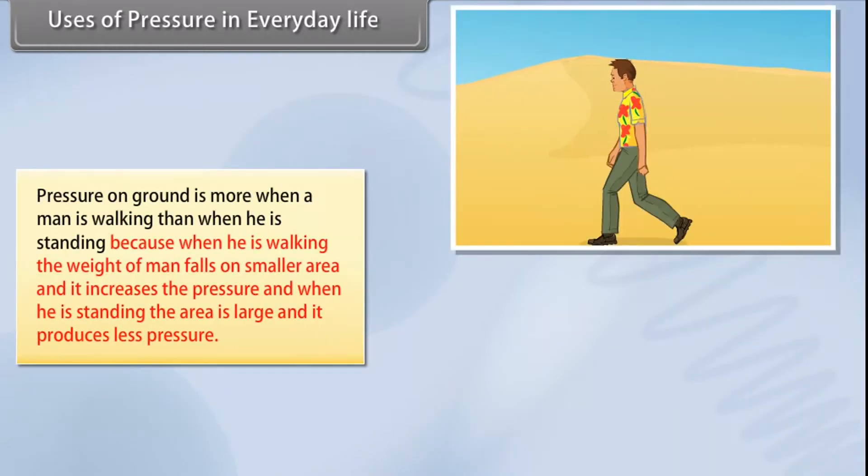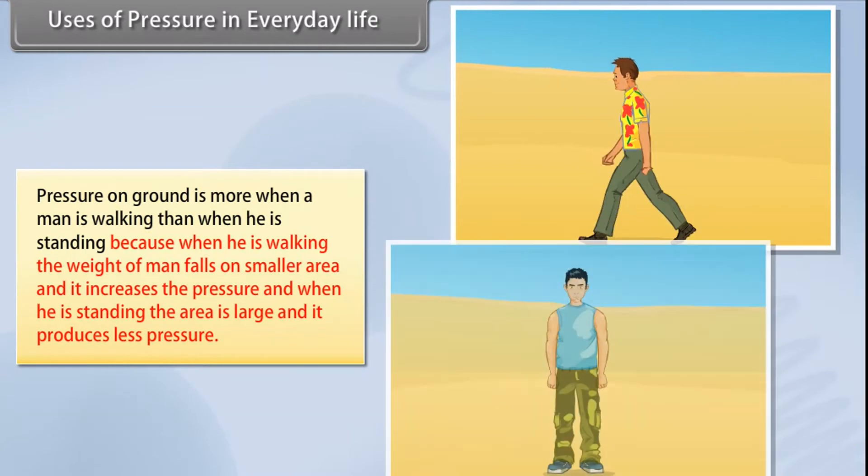Pressure on ground is more when a man is walking than when he is standing because when he is walking the weight of man falls on smaller area and it increases the pressure, and when he is standing the area is large and it produces less pressure.